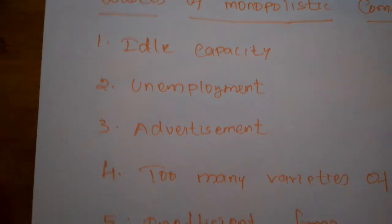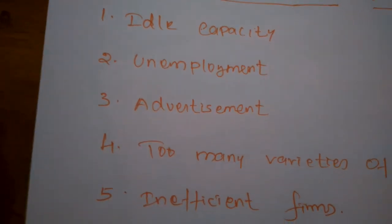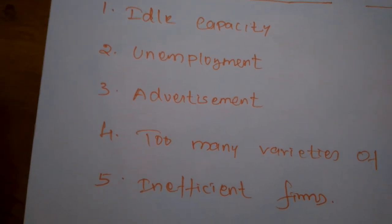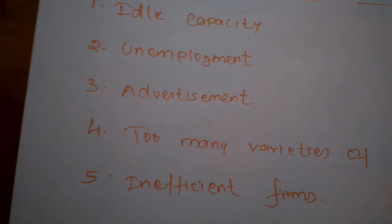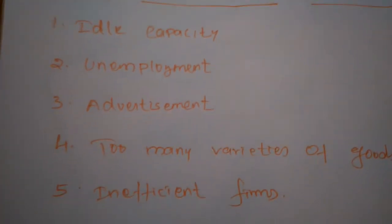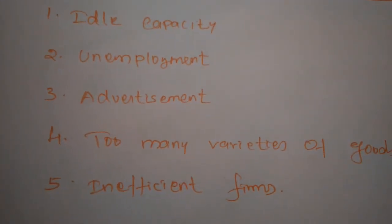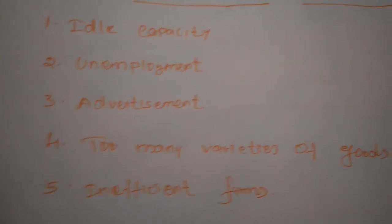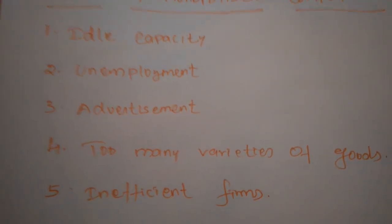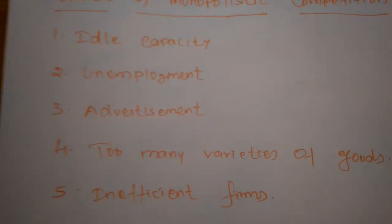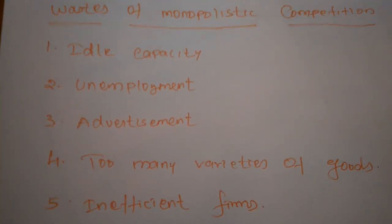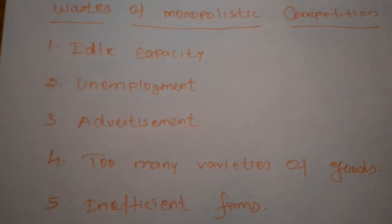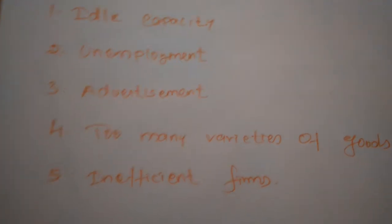A monopolistic firm deliberately produces output which is less than the optimum output — that is, the output corresponding to the minimum average cost. Normally all firms expect to produce more commodity at a low average cost, but some companies, to make competition with other firms, will not produce more commodities. Next is unemployment.